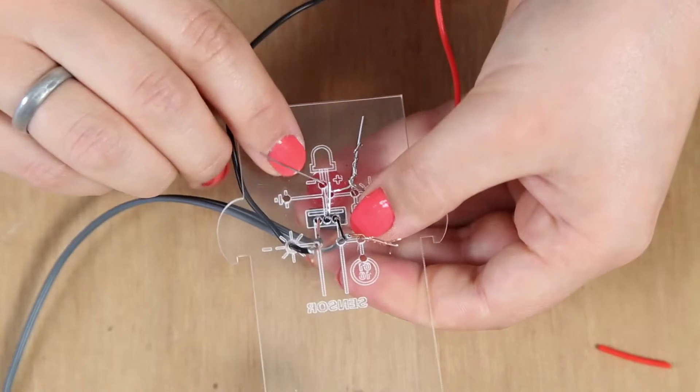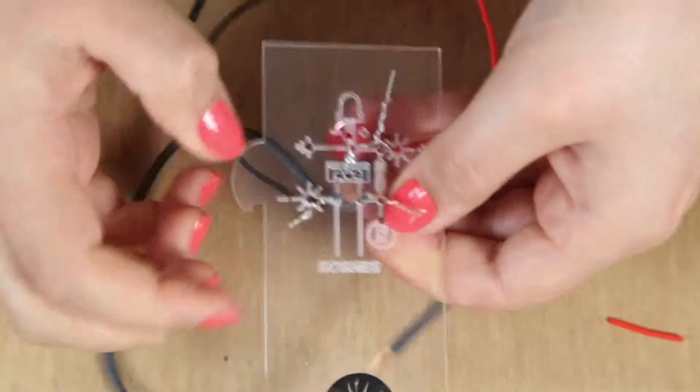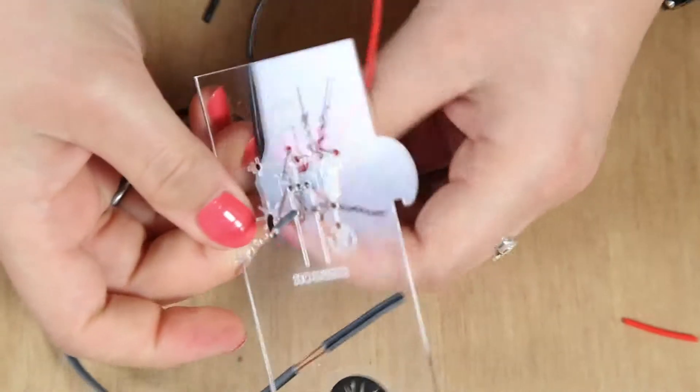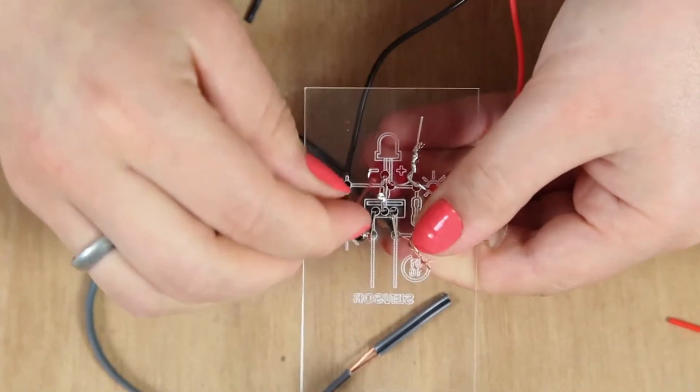So that's because we want to attach the negative leg of the LED to the middle leg. And then you want to attach the sensor and the negative of the solar panel to the left leg of the MOSFET.